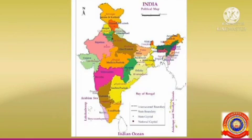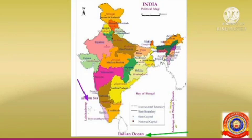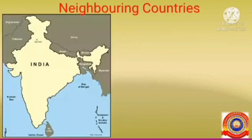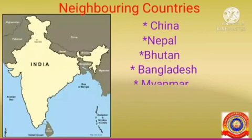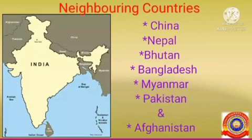The ocean to the south of India is the Indian Ocean. The part of the ocean to the east of India is known as the Bay of Bengal, and to the west is known as the Arabian Sea.